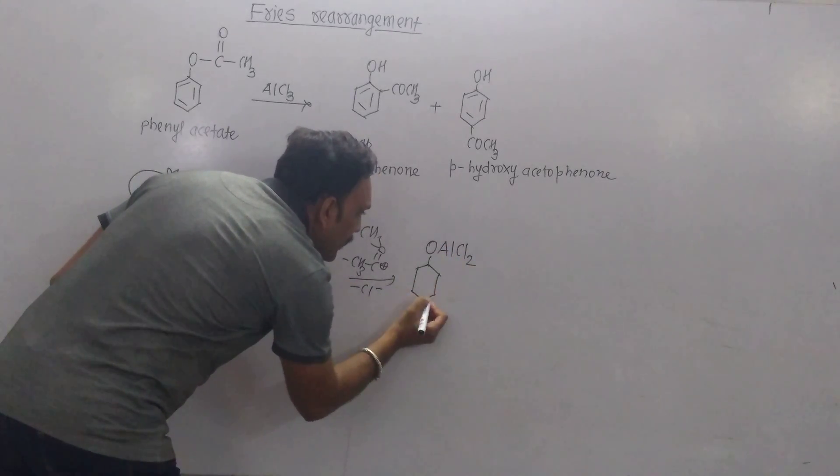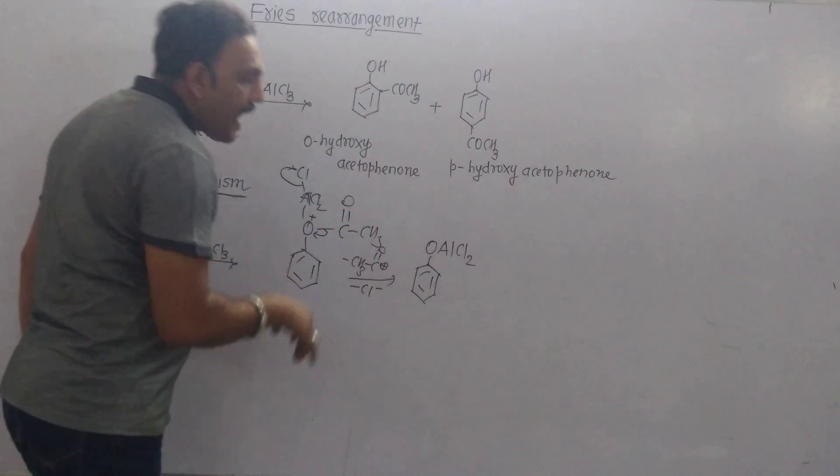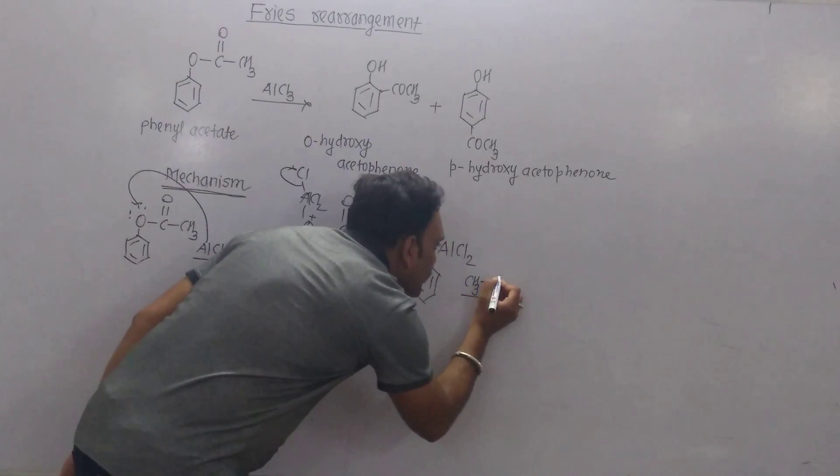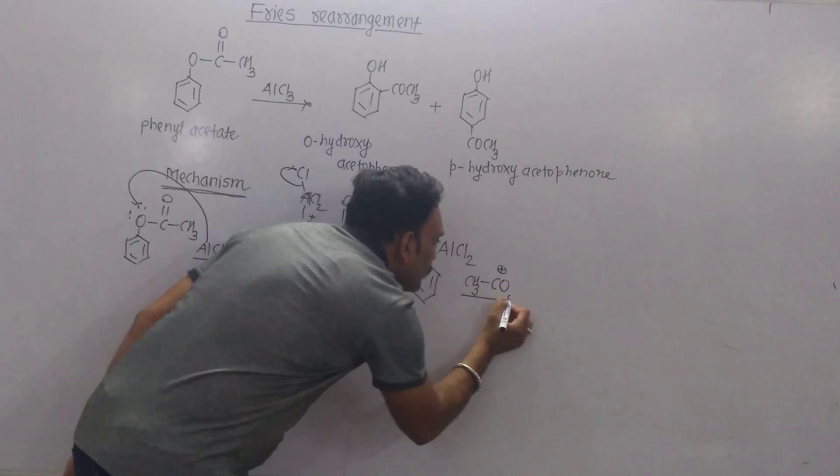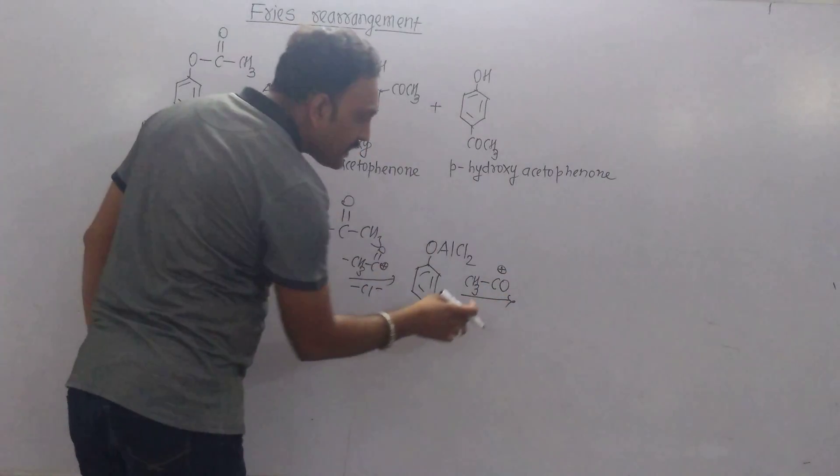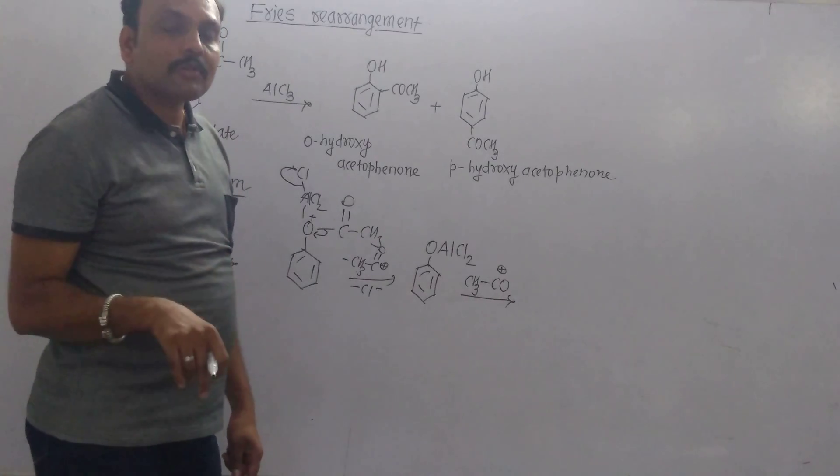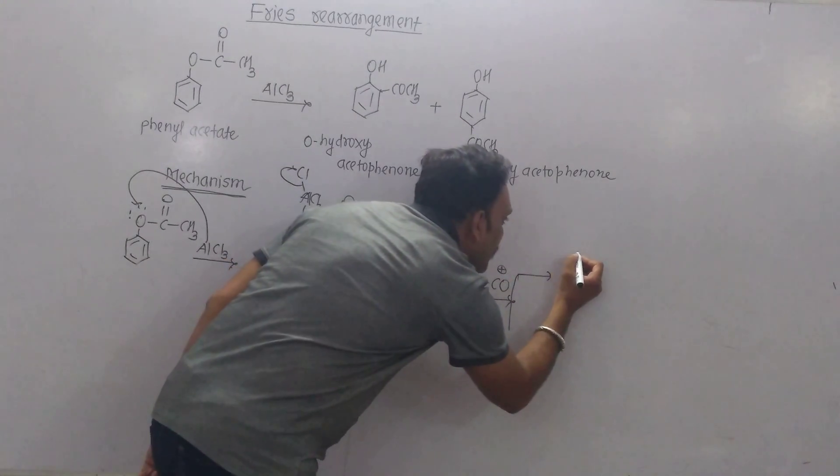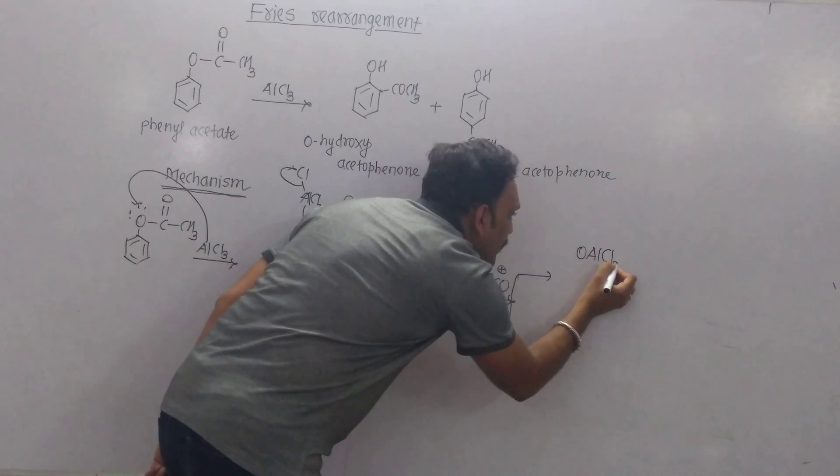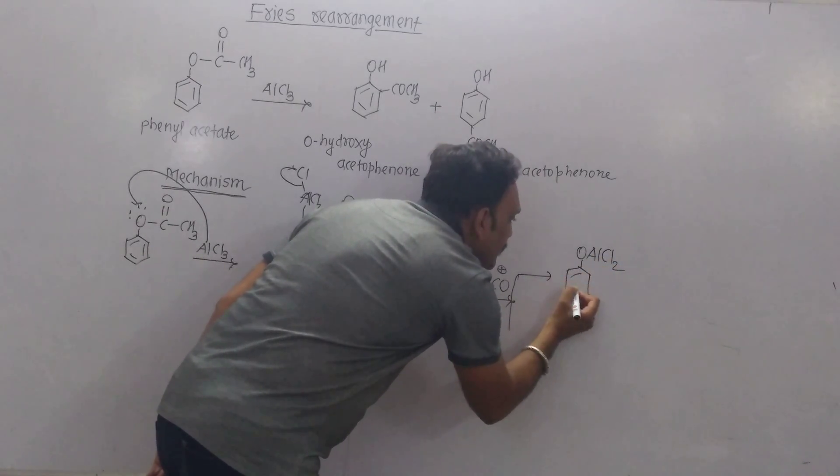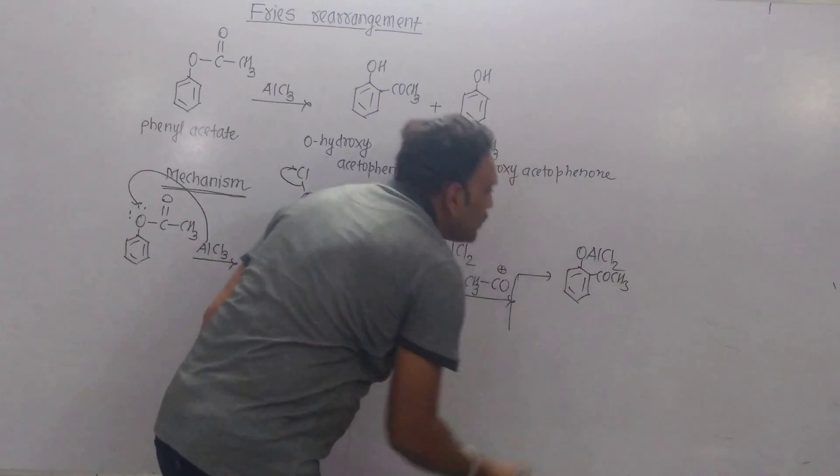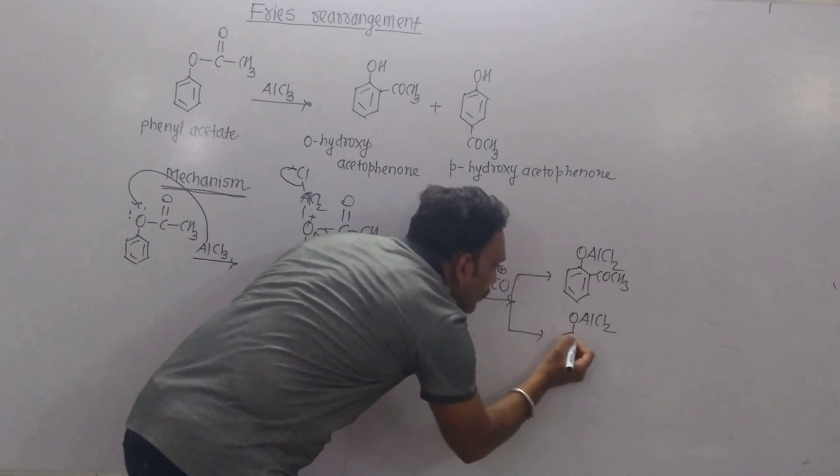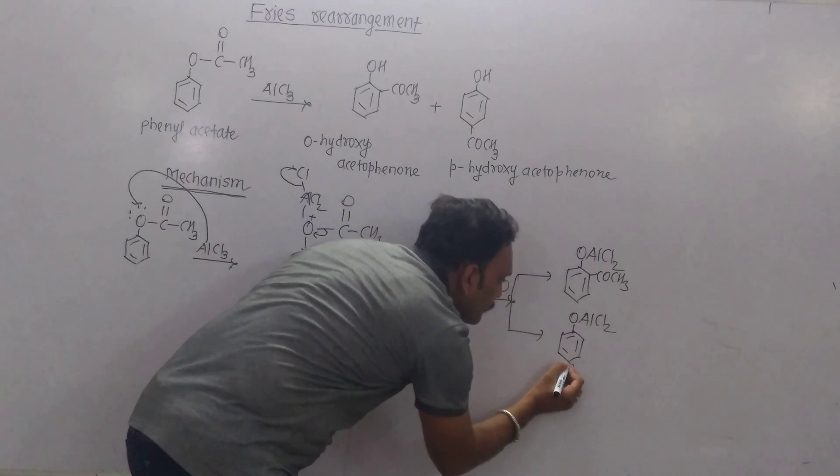This intermediate is further attacked by the acetylium ion. The attack takes place at the ortho and para positions, so we receive two different intermediate products. One is the ortho-substituted intermediate, and the other is the para-substituted intermediate.